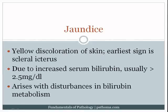The final section of this chapter deals with the liver. The first topic is jaundice. Jaundice is yellow discoloration of the skin. The earliest sign of jaundice is scleral icterus, or a yellow discoloration of the sclera of the eyes.